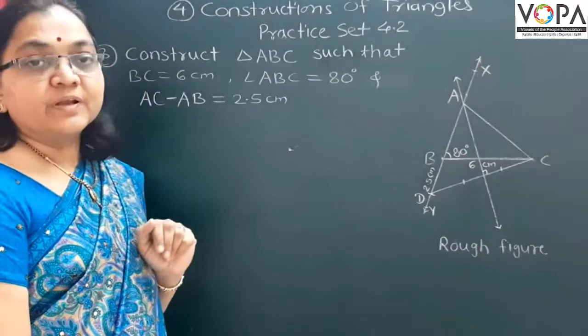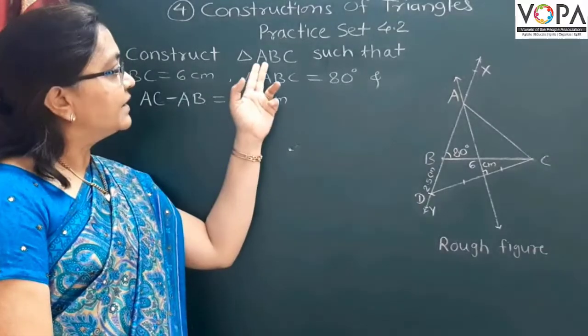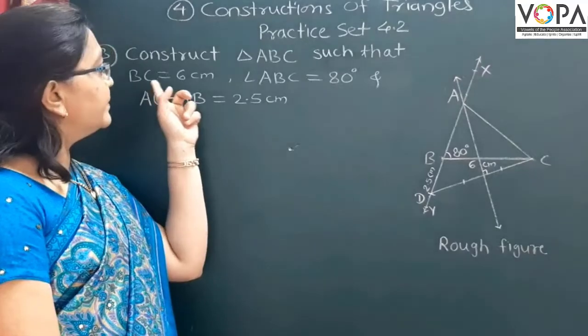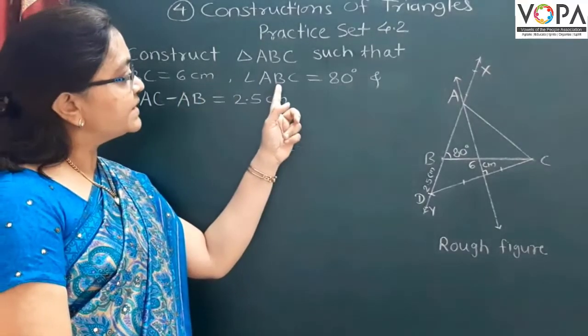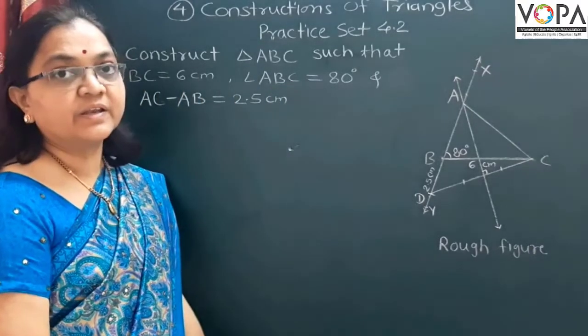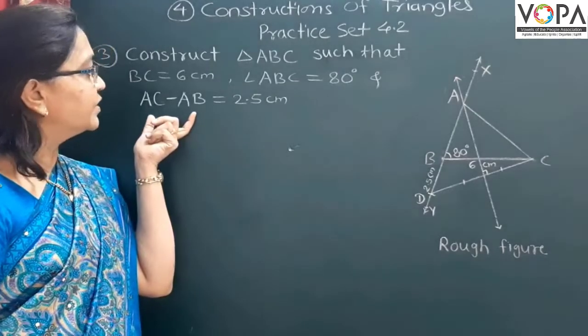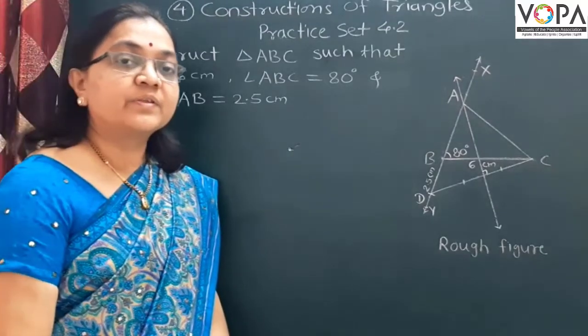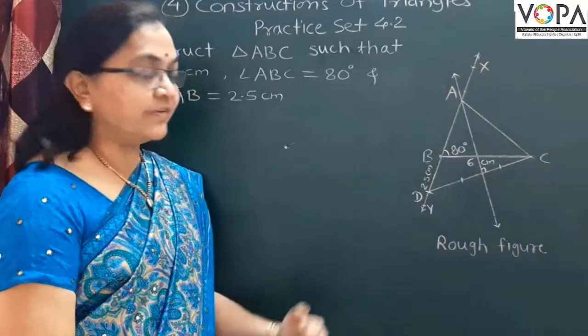In that example, we have to construct triangle ABC in which base of that triangle BC is given, and difference between the two sides. For that, first draw the rough triangle.